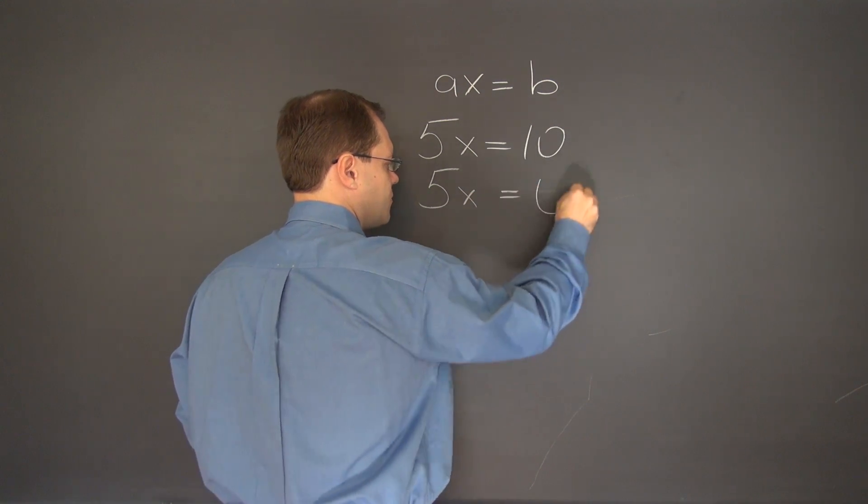So there are really four different things that could happen. We could have an equation like 5x equals 10, so a equals 5, b equals 10. Or we could have 5x equals 0. Or we could have 0x equals 10. Or we could have 0x equals 0.